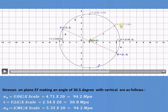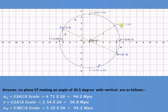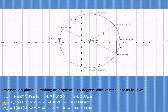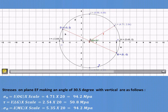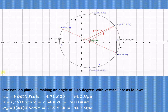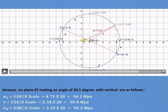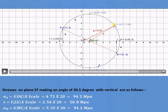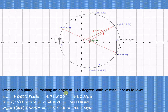The coordinates of point L are (4.71, 2.54). So 4.71 × 20 gives the normal stress on the plane, and 2.54 × 20 gives the shear stress tau. Joining L to the origin M and measuring the length ML = 5.35, then 5.35 × 20 gives the resultant stress acting on that plane. In this way we have calculated the normal stress, shear stress, and resultant stress.